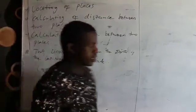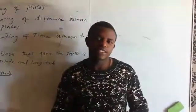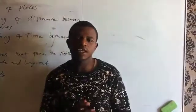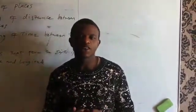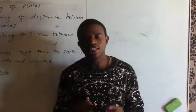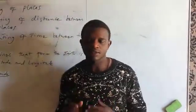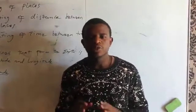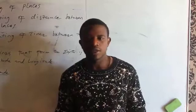Now let's look at the latitude. Latitude lines run from east to west on the Earth's surface. The latitude which is zero degrees is referred to as the equator.